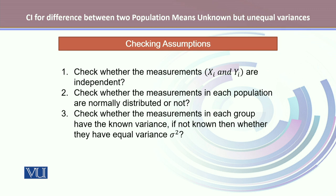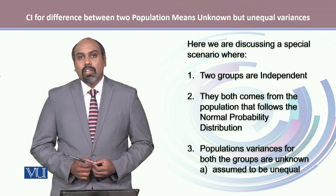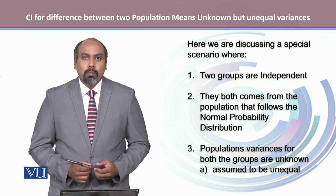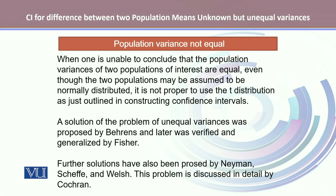Here we are discussing a special scenario where two groups are independent and they both come from a population that follows the normal probability distribution, and their population variances are unknown but assumed to be unequal. When population variances are not equal, it gives rise to a special scenario.